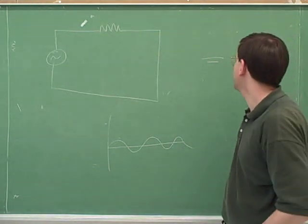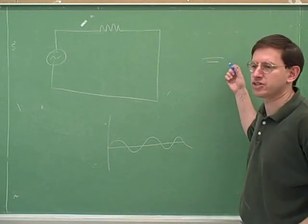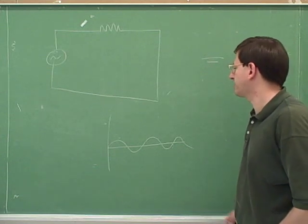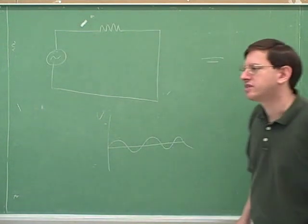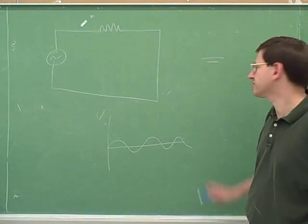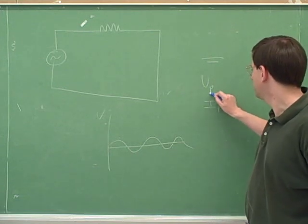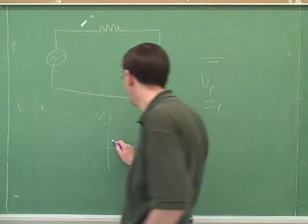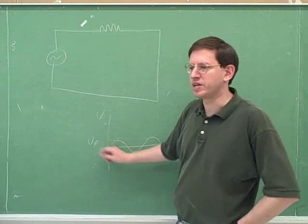When we were working with direct current, we just said: what's the voltage of the power source? But now we can't just ask what's the voltage, because the voltage is constantly changing and the current is constantly changing. So instead we might say: what's the peak voltage or what's the peak current? We could use VP for the peak voltage and IP for the peak current. For example, this height would represent the peak voltage.